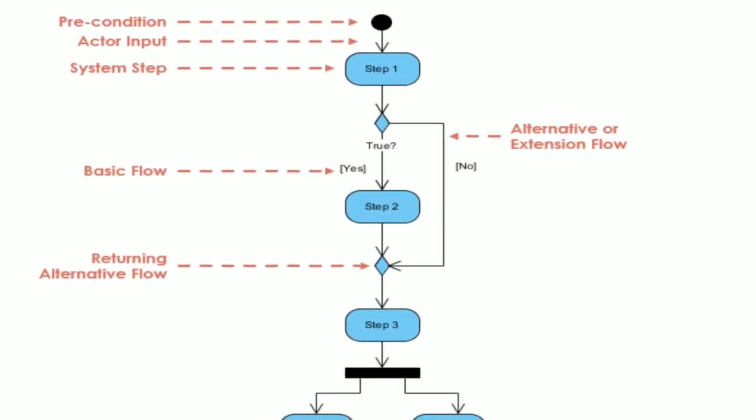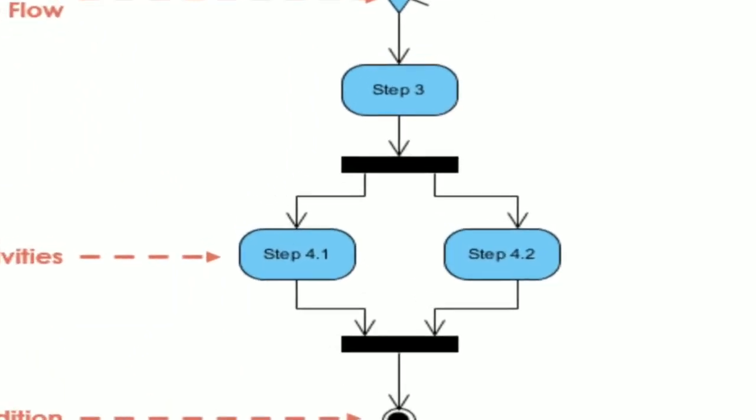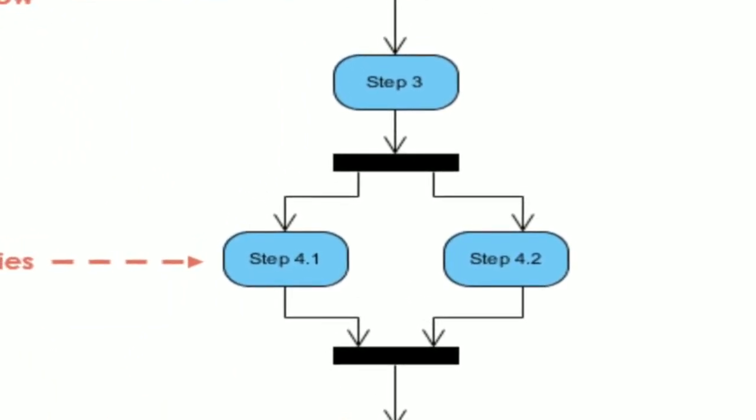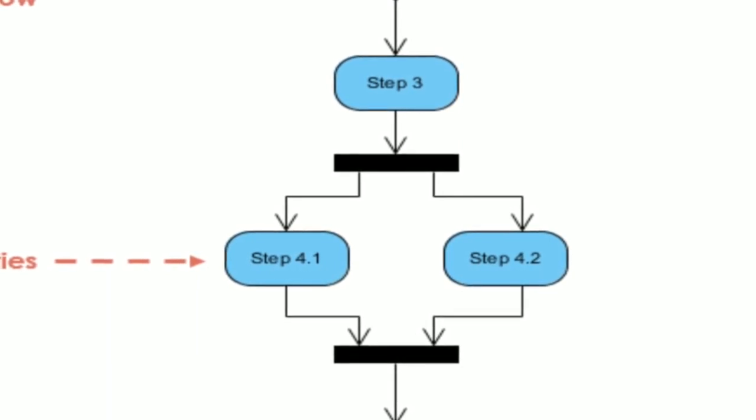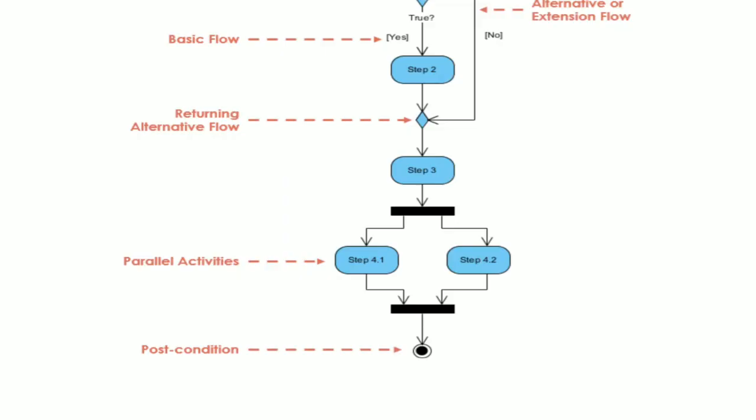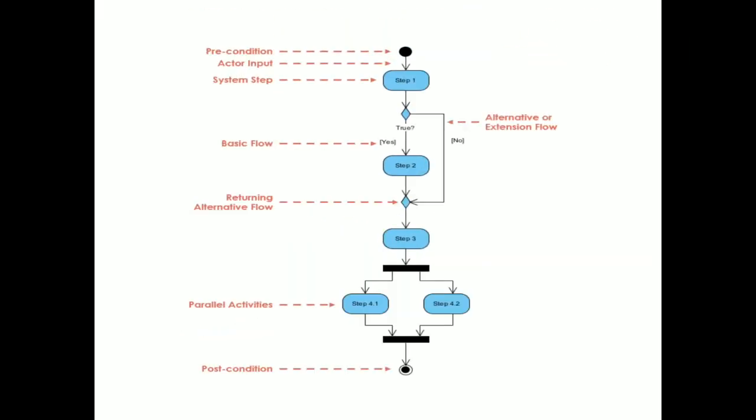Parallel activity. After forking, this is the fork and at the end join is there. Parallel operations in step 4.1 and 4.2 we can show, and finally post-condition, that is nothing but your stop.